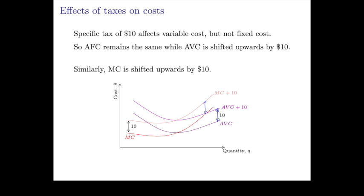So we would see that the average variable cost and the marginal cost, both curves would shift upwards by $10.